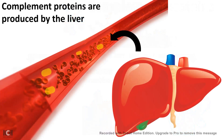Complement proteins are produced by the liver and they are circulated into the bloodstream. Even though they are circulated in the bloodstream, they don't cause harm to the body because they are in an inactive state and they need proteolytic cleavage in order to get activated. We would see how selective pathogen encounter can allow them to be activated and thereby perform the downstream action.